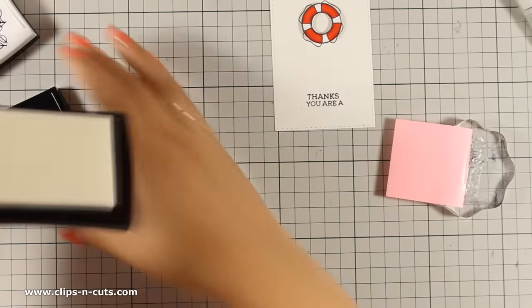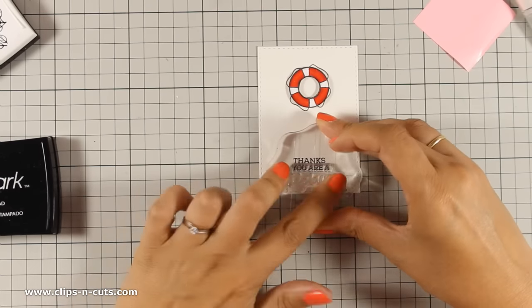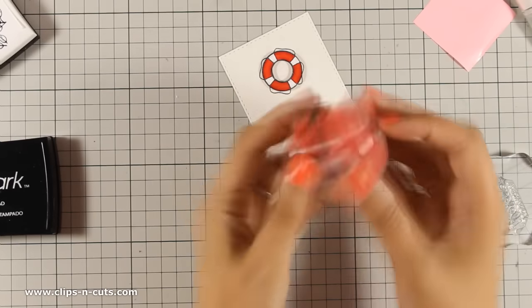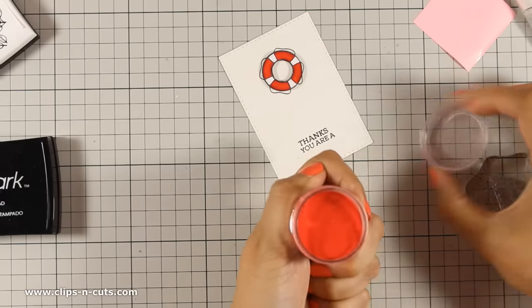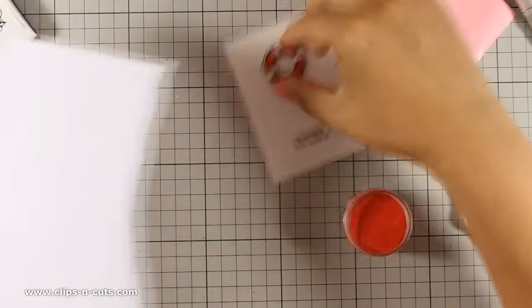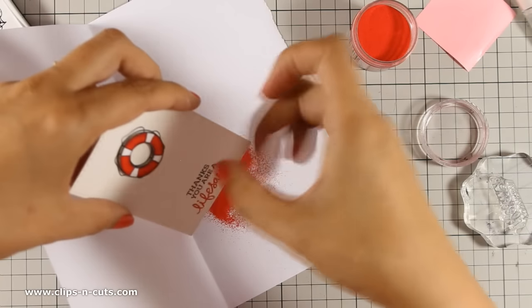When it comes to nautical cards I have a recipe and you can never go wrong if you follow these guidelines. So you need to use stripes in some part of your card, you have to use blue navy as well as red and a touch of gold.